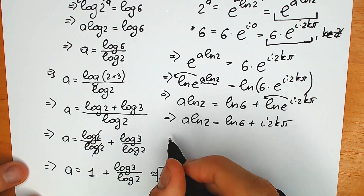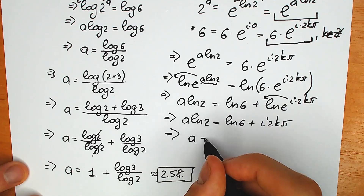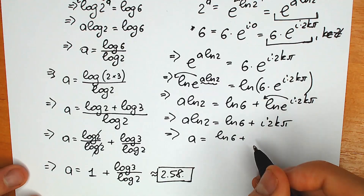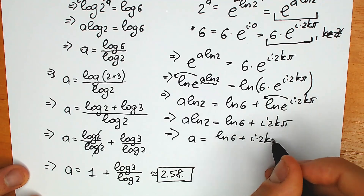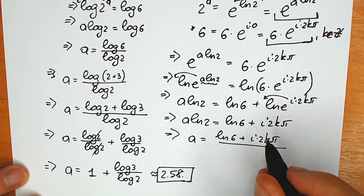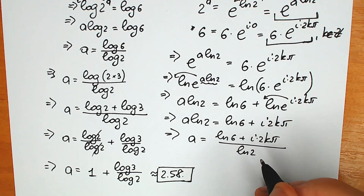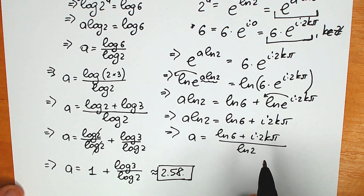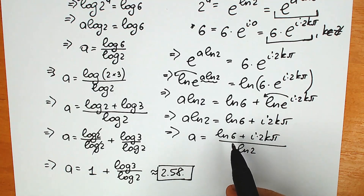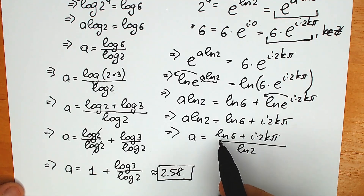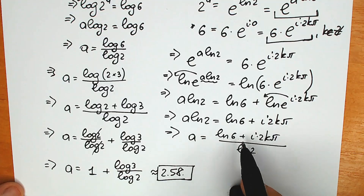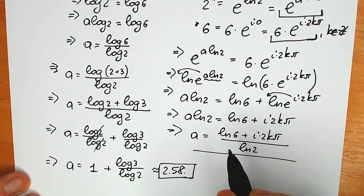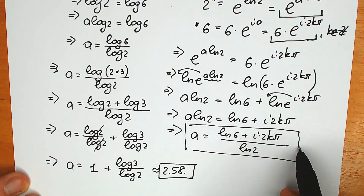The final step: we need to divide both sides by natural log 2. So a equals (natural log 6 plus i times 2kπ) divided by natural log 2. We can also write this as (natural log 2 plus natural log 3 plus i·2kπ) over natural log 2 — it's up to you how you prefer to express it. We can underline this as a complex root to our question.